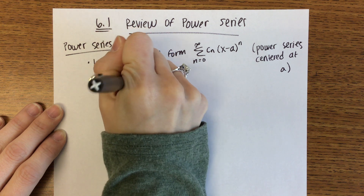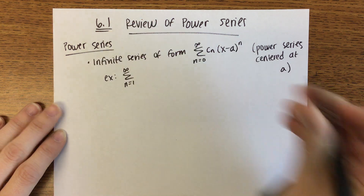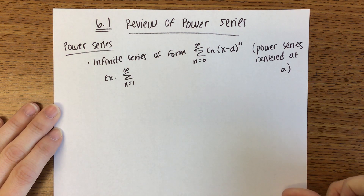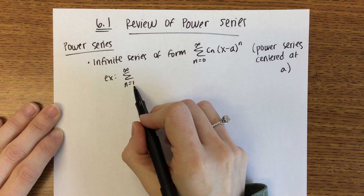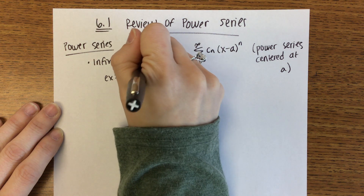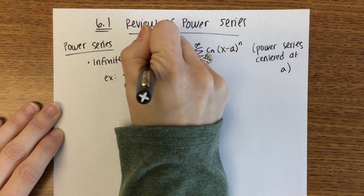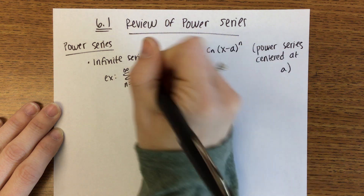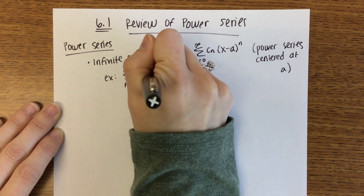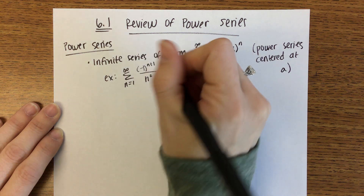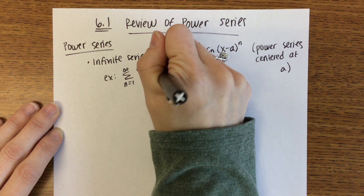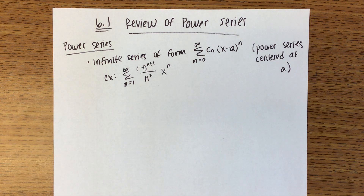As an example, we might have the sum from n equals 1 to infinity — so it's not always going to start at 0, this one starts at 1. The constant c_n is negative 1 to the n plus 1 power over n squared, and then we have x to the n power. This is a power series that is centered at 0.